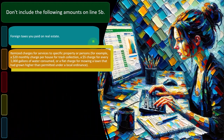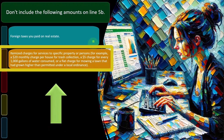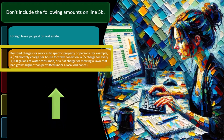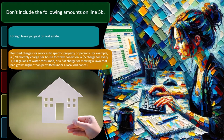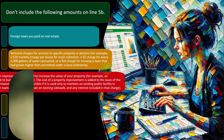Don't include itemized charges for services to specific property or persons — for example, a $20 monthly charge per house for trash collection, a $5 charge for every 1,000 gallons of water consumed, or a flat charge for mowing a lawn that had grown higher than permitted under a local ordinance. This makes sense because that's not exactly property tax — it's more like maintenance or required maintenance charges.